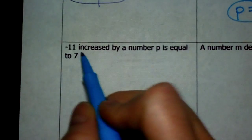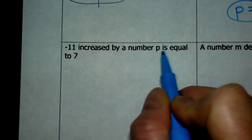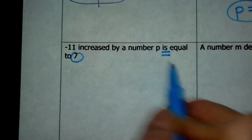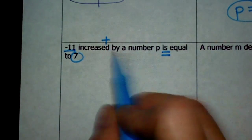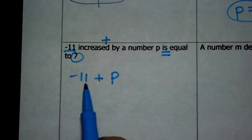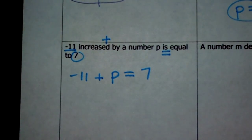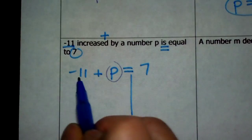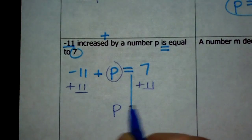Next: negative 11 increased by a number p is equal to 7. The word is equal to gives my equal sign, and 7 follows. Increased by means addition: I take negative 11 and increase it by p, which is negative 11 plus p. The equation is: negative 11 plus p equals 7. Draw your line — here's p. Get rid of the negative 11 that's being added by adding positive 11 to both sides. So p equals 18.